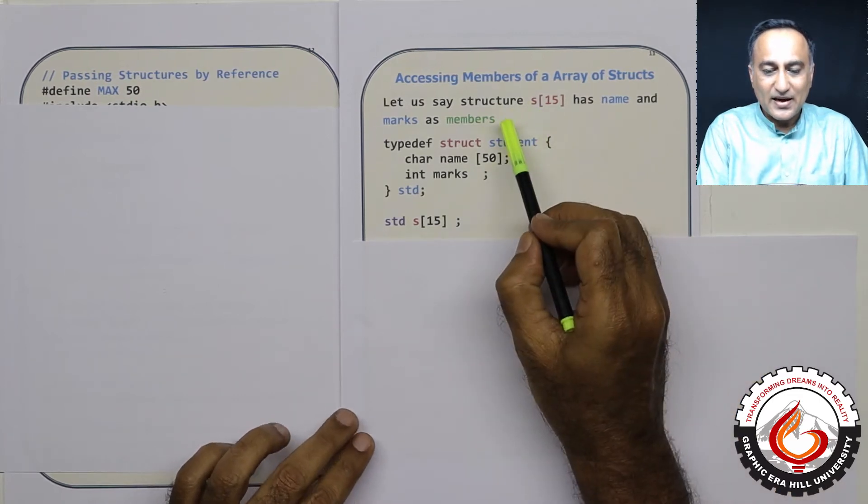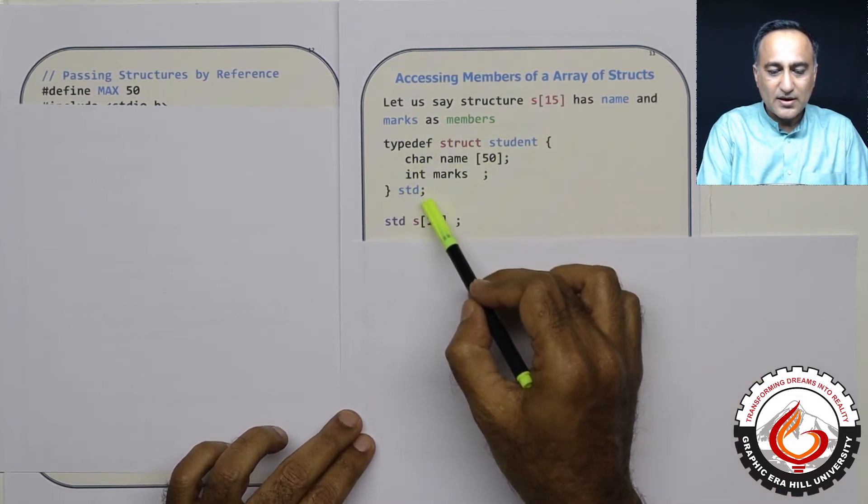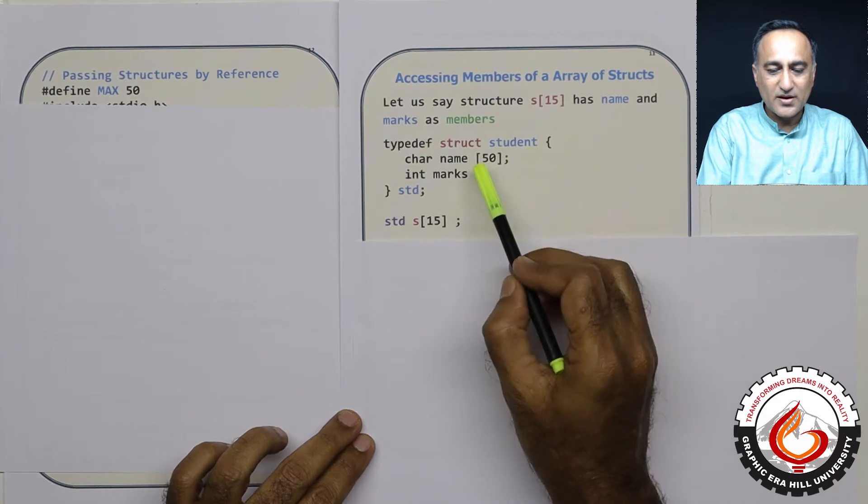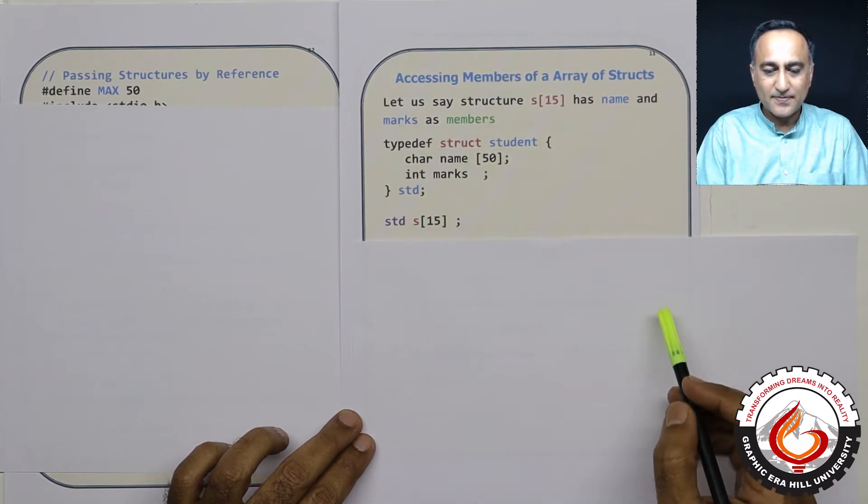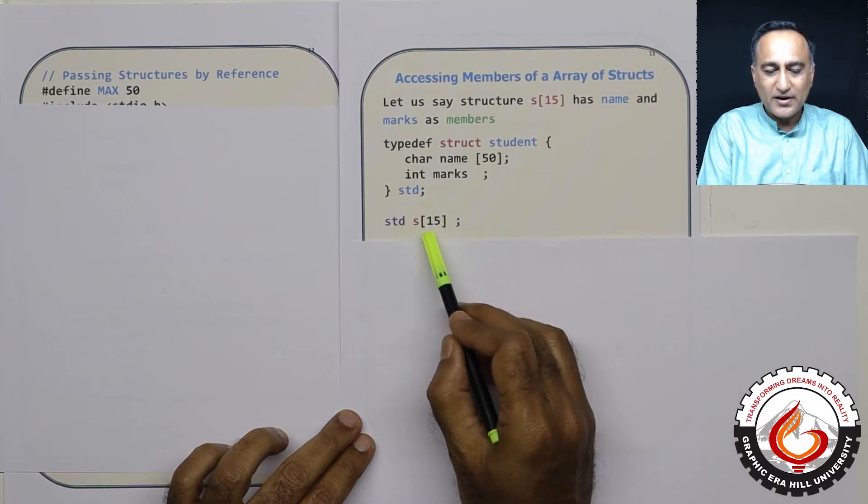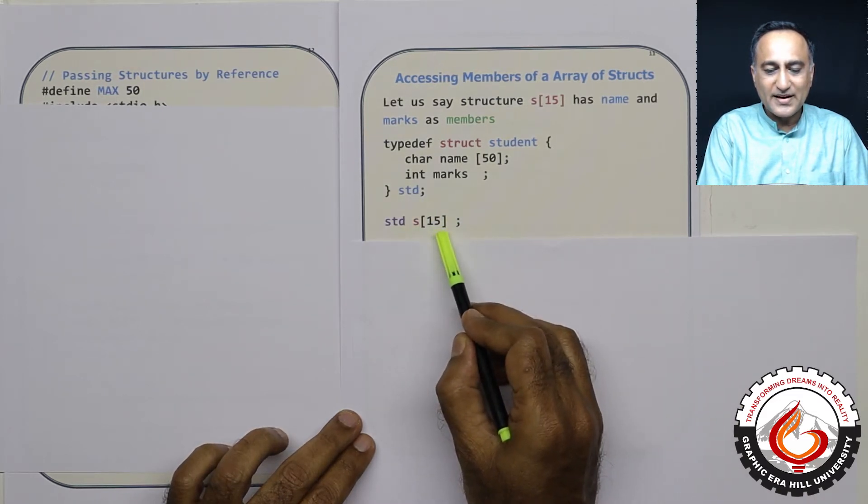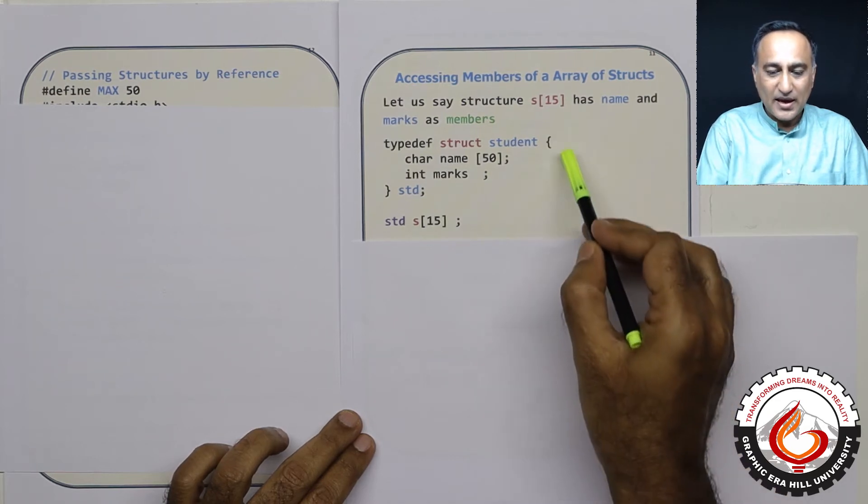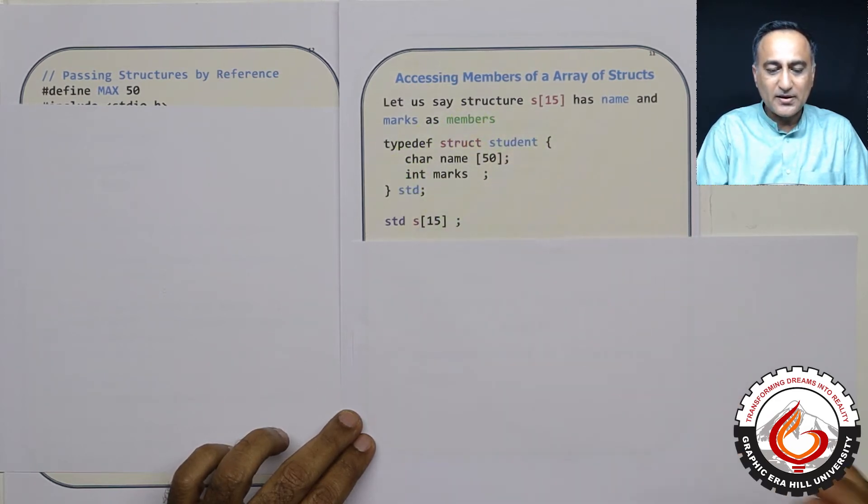Let's say I have a structure whose declaration is like this: student contains name and marks. This is the typedef. So I have created s of 15. It indicates that it is an array of structures of this particular type.